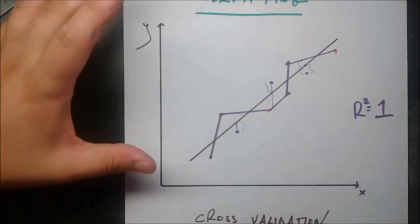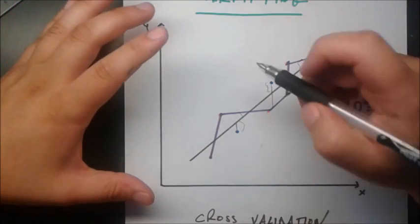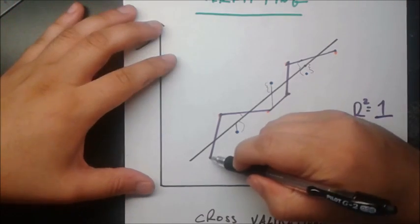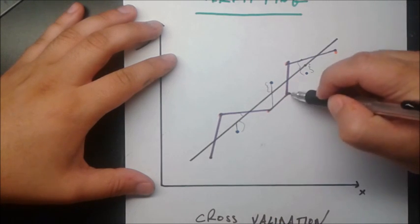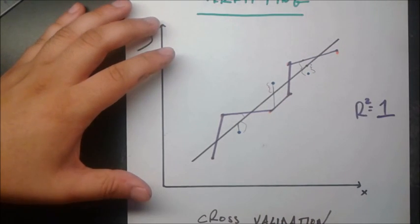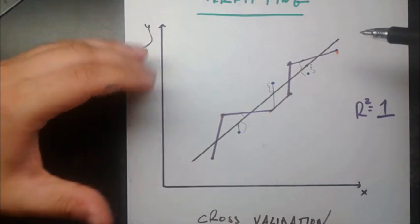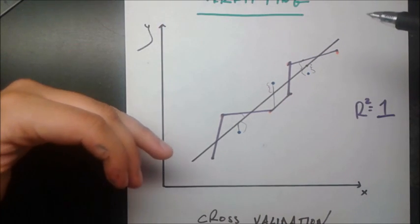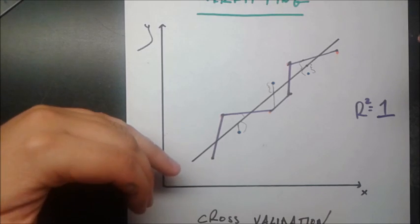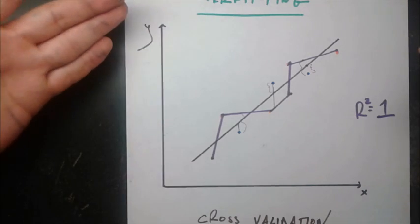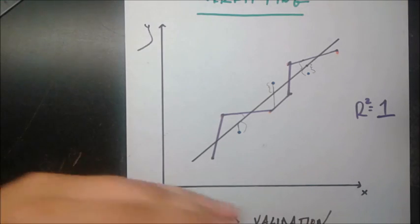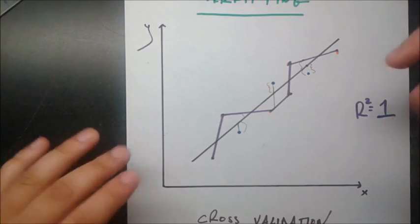So this is the problem called overfitting, and that's why you should never make a model that is just tailored towards these points. You should always keep in mind that this model is going to be used to predict other y instances given x instances.